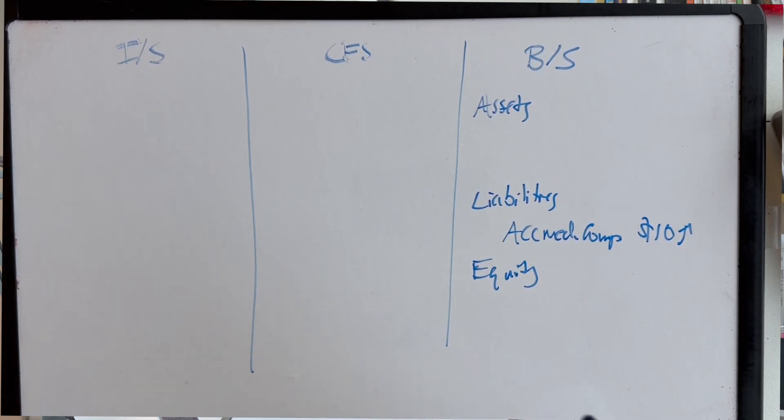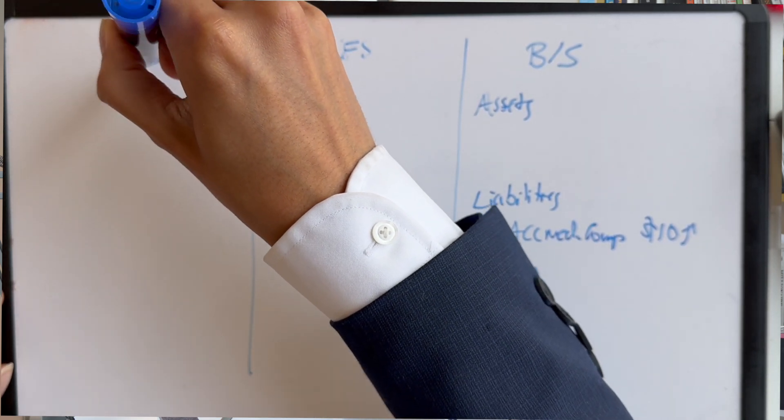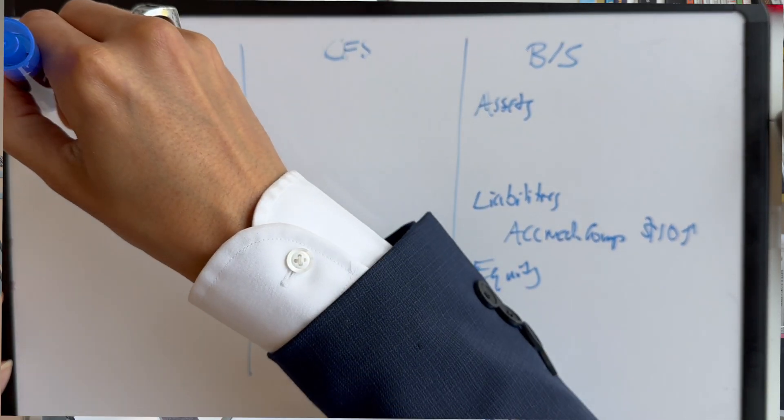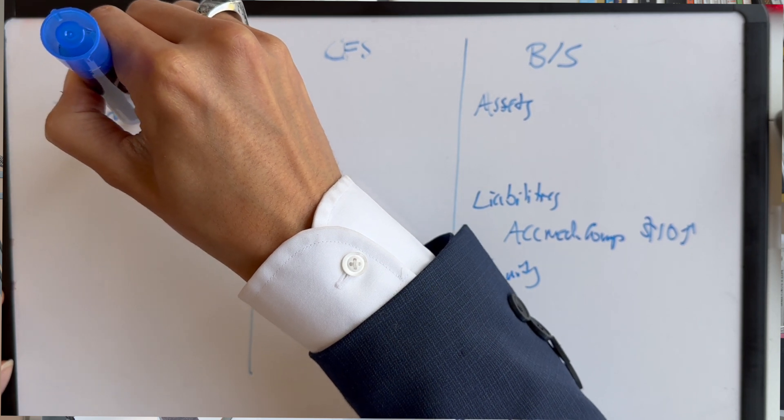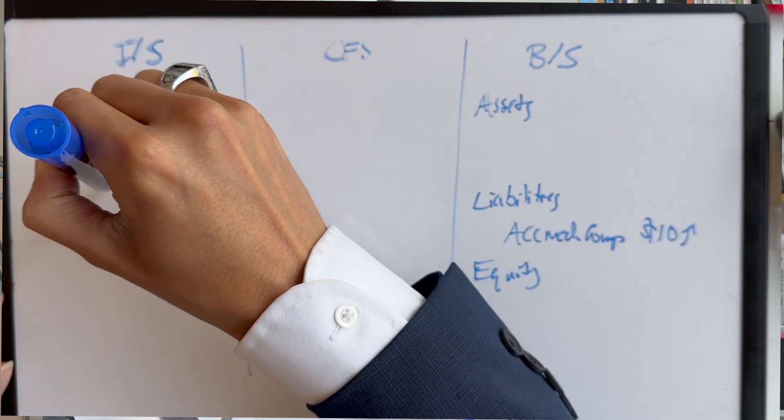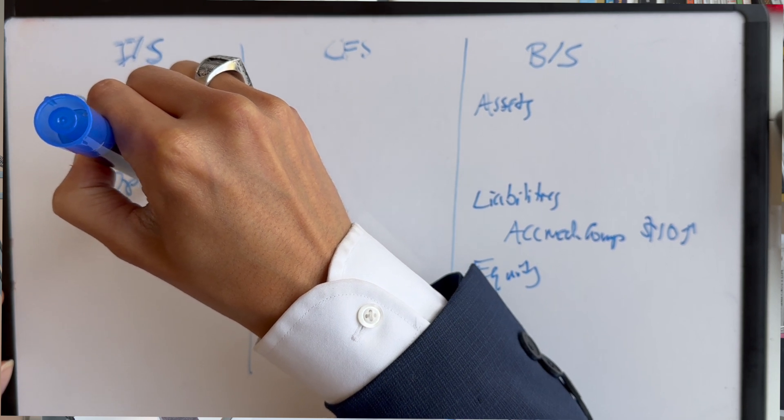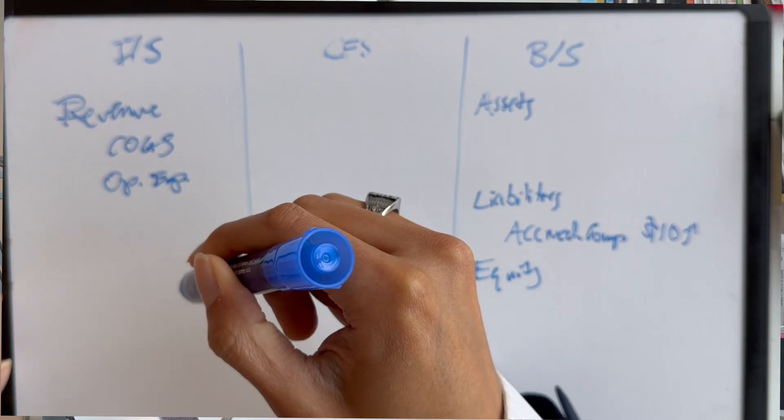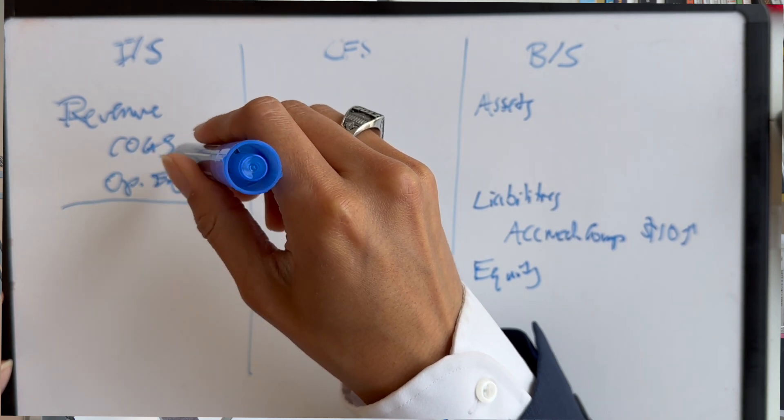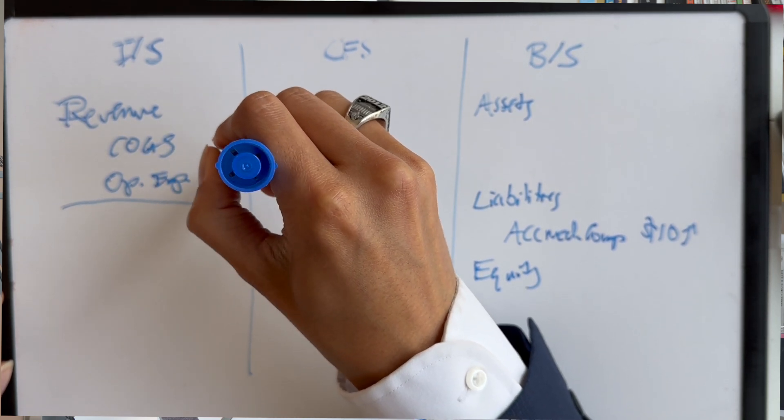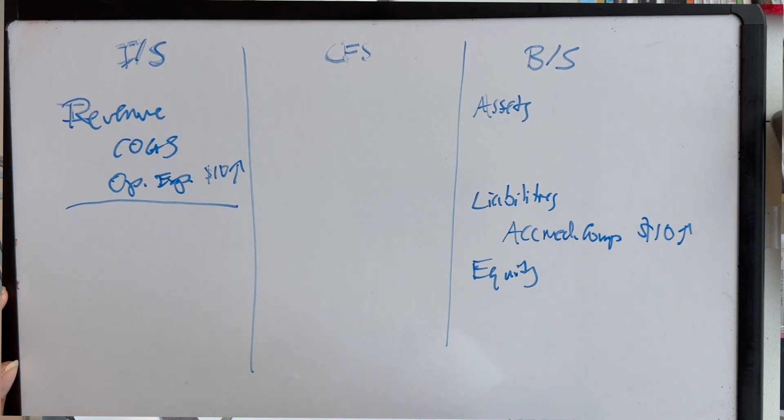So, we're going to take a break from the balance sheet for a second and go over to the income statement. So, on the income statement, this is an expense, right? This is something that has to be paid. Therefore, it's going to go into the income statement as an expense. So, we have revenue, you got your cost of goods sold, and your operating expenses. So, that's going to be impacted. So, operating expenses, they're going up by $10, right? Accrued compensation.